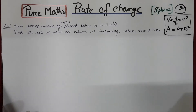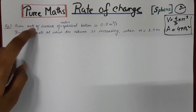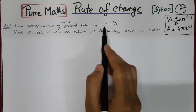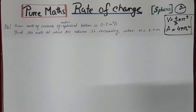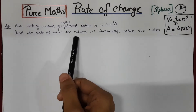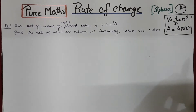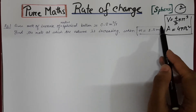Suppose here is an example. We know the rate at which the radius of the sphere is increasing, which is 0.2 meters per second. That is the given information, and we need to find the rate at which the volume is increasing. And this is your value of radius.